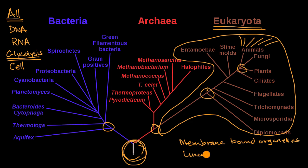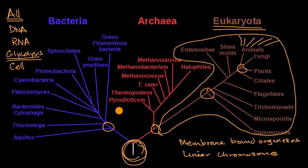They all have linear chromosomes. In other groups in this tree of life, in this evolutionary tree, you might have circular chromosomes. But common to all eukaryotes are linear chromosomes, and they all have chromosomes that contain introns.